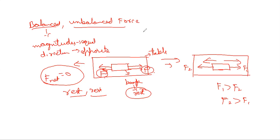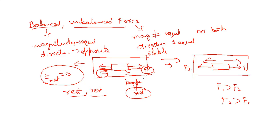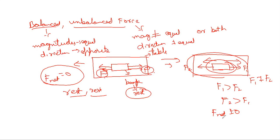What do you mean by unbalanced force? Two forces are said to be unbalanced if either their magnitudes are not equal, or their directions are not opposite, or both conditions are not satisfied. Since F1 is not equal to F2, there is some net amount of force on this book — that means F net is not equal to zero, meaning there is some force acting on the book.